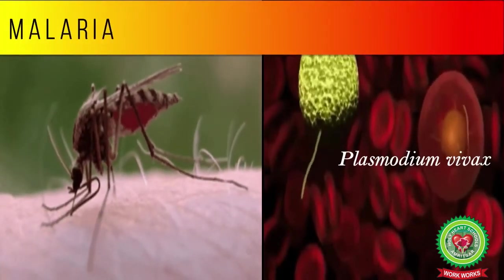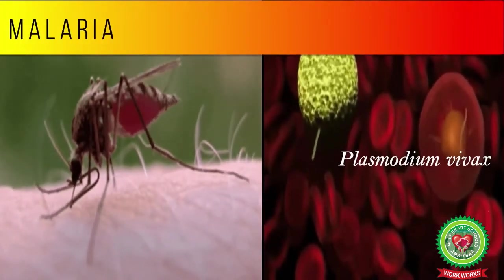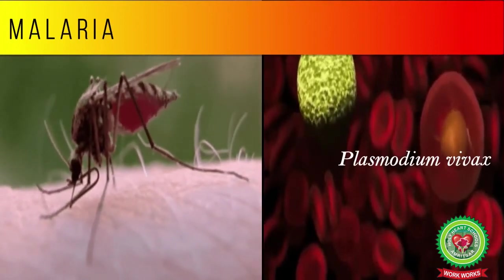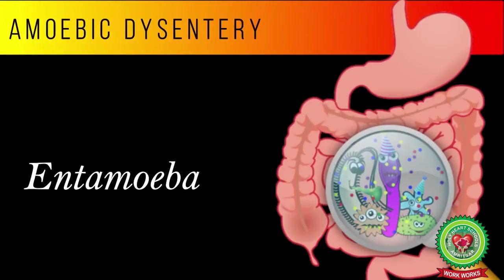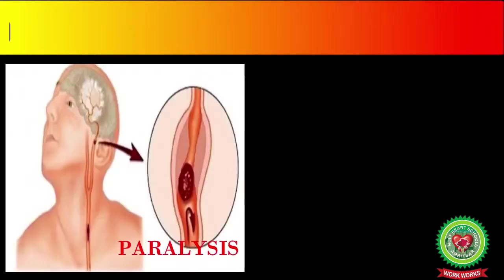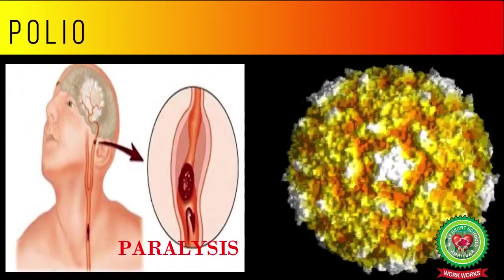Malaria is a disease caused by the protozoa Plasmodium vivax, and amoebic dysentery is a serious disease caused by Entamoeba. Microbes like viruses cause polio, measles, flu, common cold, and chickenpox.